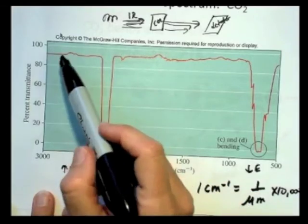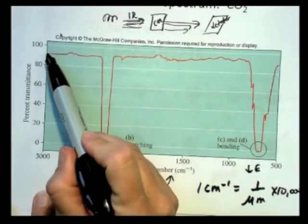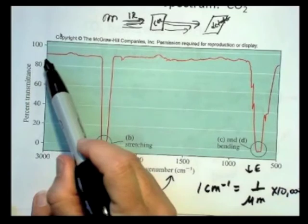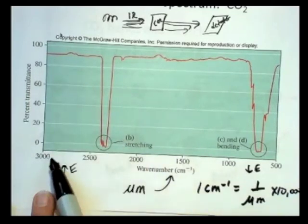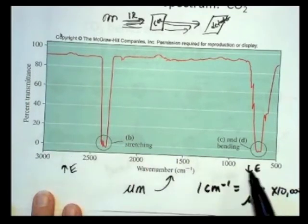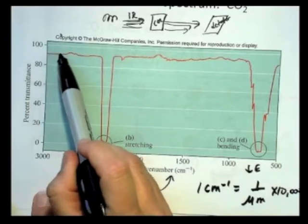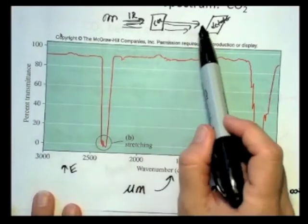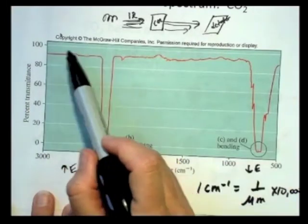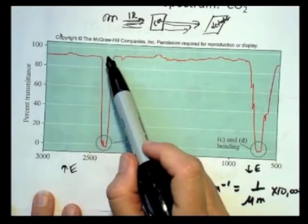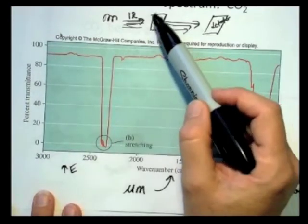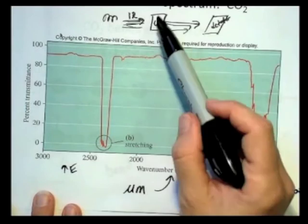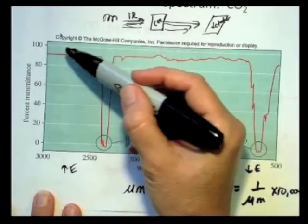To make a long story short, what happens is you're exposing the sample carbon dioxide to infrared radiation of varying wave number, or wavelength, and the transmittance is how much is getting through. And most of the infrared light is getting through, maybe a little bit is being absorbed by some other gases that are in the sample or the container or whatever.